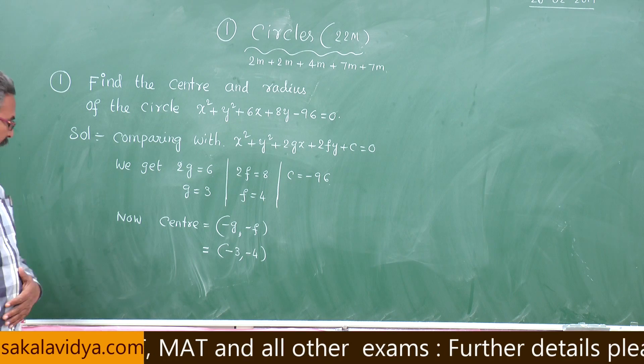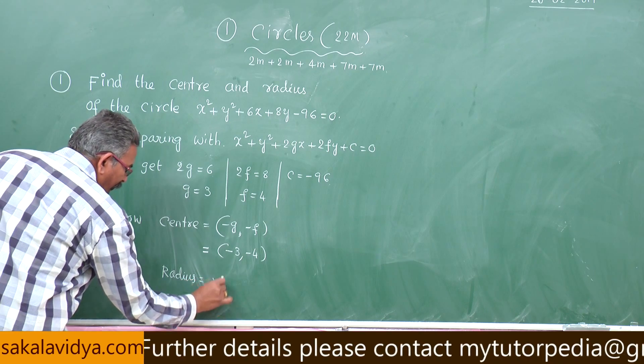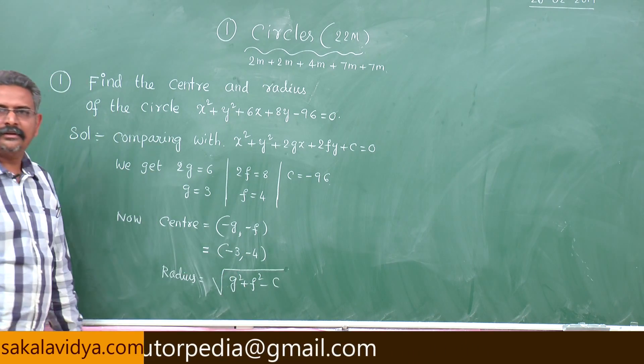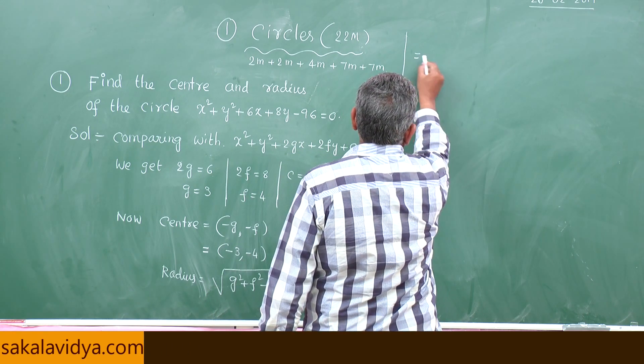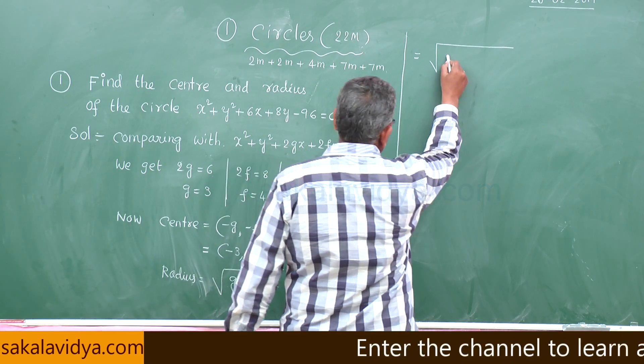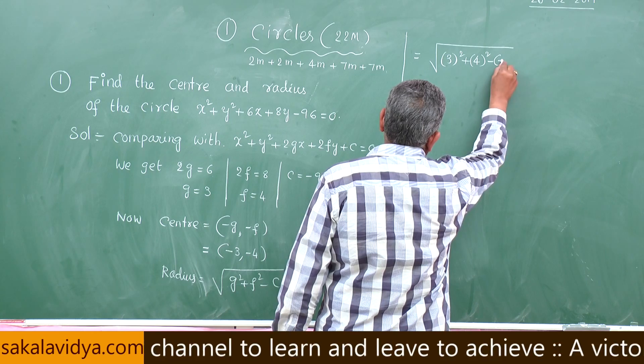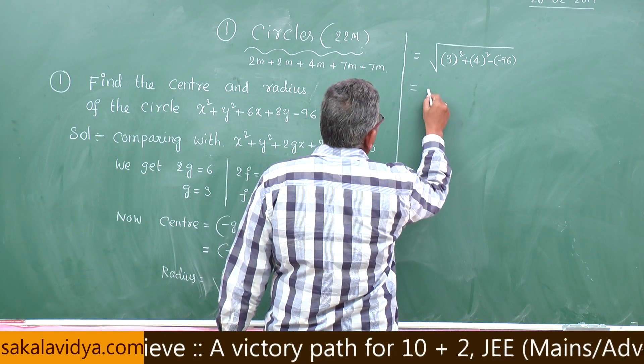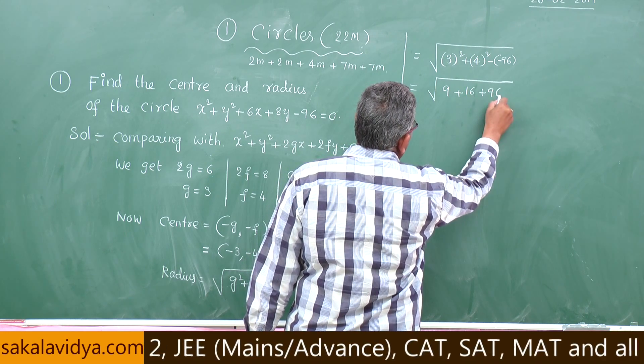Next, what we have to find out? Radius. Radius = √(g² + f² - c). Now let us substitute the values. This is equal to √(g² means 3² + 4² minus of minus 96). This is very very important, here minus 96 is there. Now this is 9 + 16 + 96.